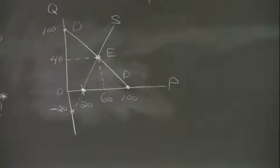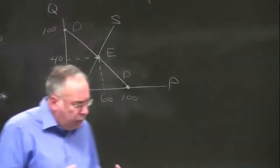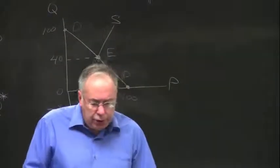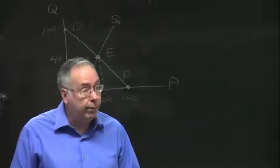At a price of 60, the quantity that consumers want to buy — read off the demand curve — is just equal to the quantity producers want to produce. So you have an equilibrium; you have a balance. From now on, we will just assume that price and quantity are at the equilibrium point.